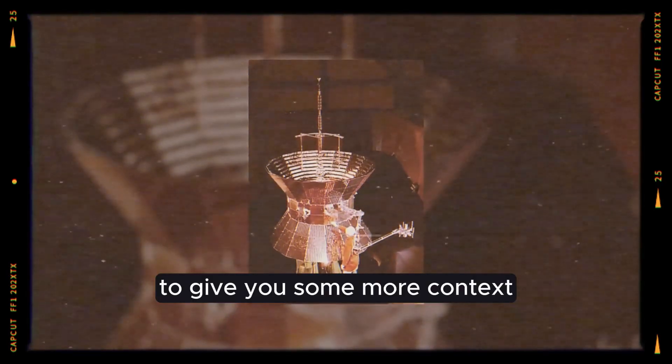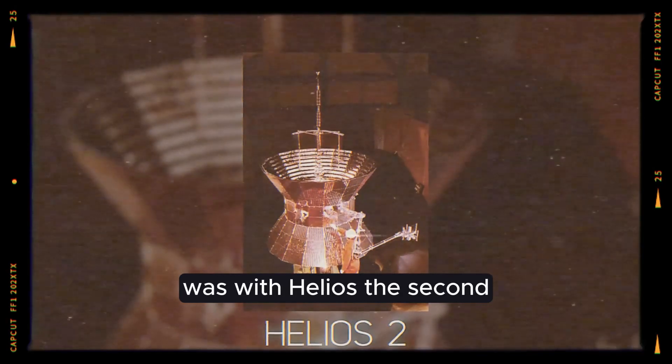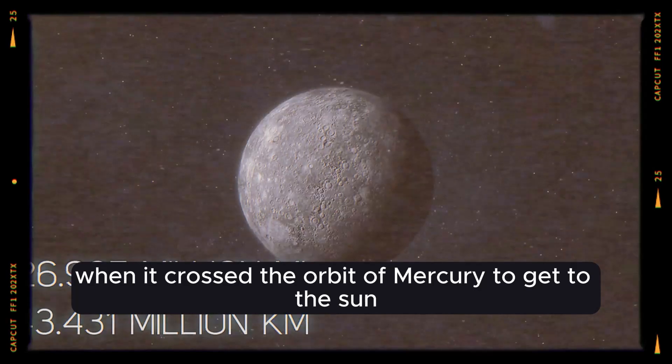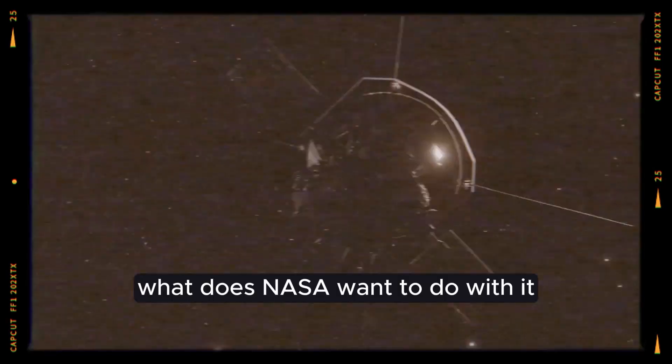To give you some more context, humanity's closest trip to our neighbor in space was with Helios II in 1976, when it crossed the orbit of Mercury to get to the sun. The Parker Solar Probe is getting pretty close to the sun. What does NASA want to do with it?